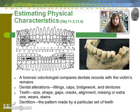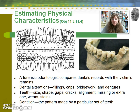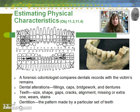A forensic odontologist may compare dental records with victim remains. This could be a positive identification and is a source of individual evidence. Dental alterations are also very helpful — fillings, caps, bridge work, and dentures have serial numbers on them, which is great for individual evidence. You can also look at specific things about the teeth: the size, shape, gaps, missing or extra teeth, stains, anything like that. Dentition is the pattern made by a particular set of teeth.